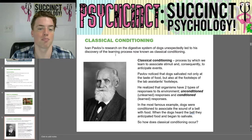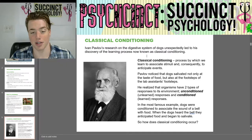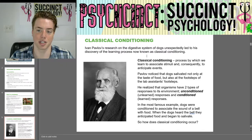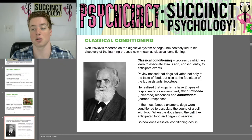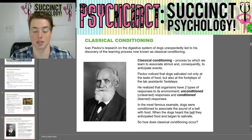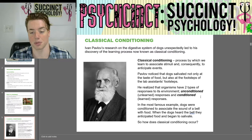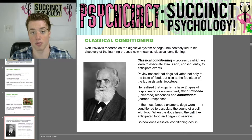Ivan Pavlov's research on the digestive system of dogs unexpectedly led to his discovery of the learning process now known as classical conditioning — a process by which we learn to associate stimuli and consequently anticipate events. Pavlov noticed that dogs salivated not only at the taste of food, but also at the footsteps of his lab assistant. He realized that organisms have two types of responses: unconditioned (unlearned) responses and conditioned (learned) responses. In the most famous example, dogs were conditioned to associate the sound of a bell with food, and when they heard the bell, they anticipated food and began to salivate.